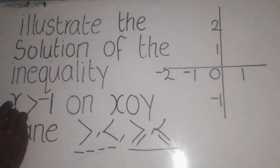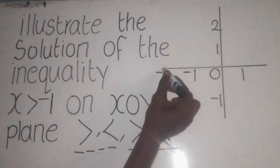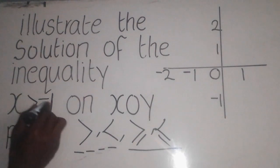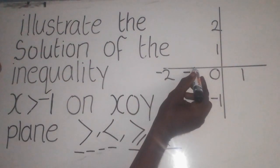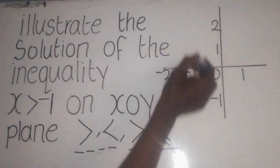Now, we are saying x, meaning we are supposed to draw the line in the line of the x-axis, which is this one. We have said negative 1. Where is negative 1 in the line of x? It is here. So, we are supposed to draw the line here.